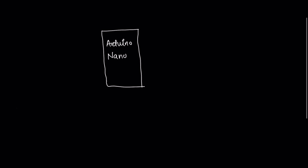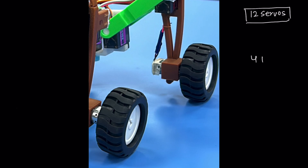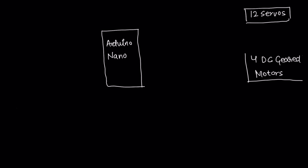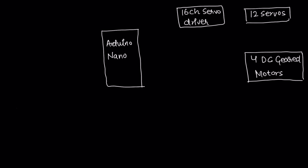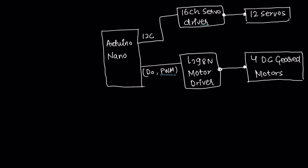Now let's break down how Legion works at the hardware level. I'm using an Arduino Nano which handles all the kinematics and movement control. I'm using 12 servos which act like limb muscles for crawling, and 4 DC geared motors with wheels which act like wheel muscles. Both are actuators — they need an interface to communicate with the Arduino Nano. The servo motors are controlled by a 16-channel PWM servo driver, and the DC motors are controlled by an L298N motor driver. The servo driver communicates with Arduino Nano via I2C protocol, and the motor driver via PWM and digital signals.